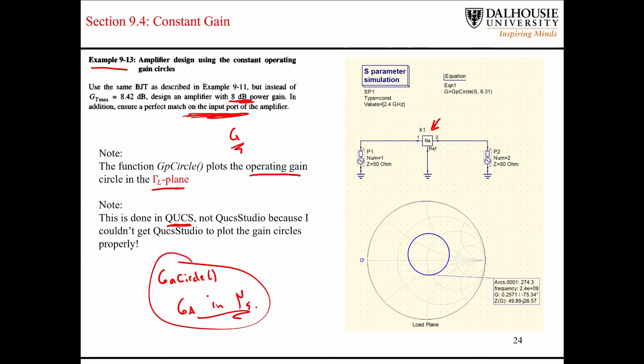Basically, they want the VSWR on the input side to be equal to 1. So, you can see over here in QUCS, I set up my S-parameter simulation. I created an S2P file using the S-parameters that are given in example 9-11 or wherever those numbers were, those values were given. I define an equation here using the function GPCircle. And you input a capital S, which is the S-parameters from your simulation, and then you give it the value of the gain on a linear plot.